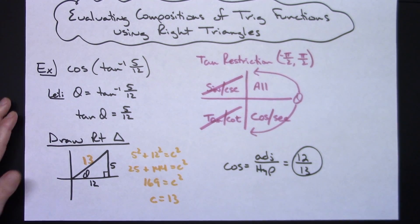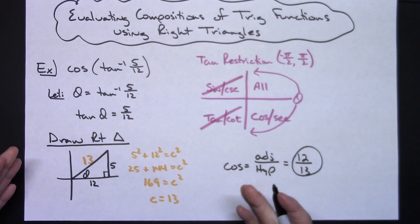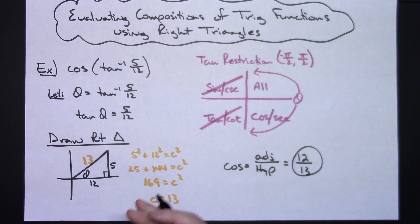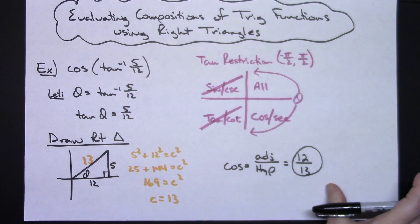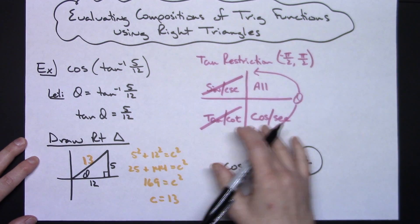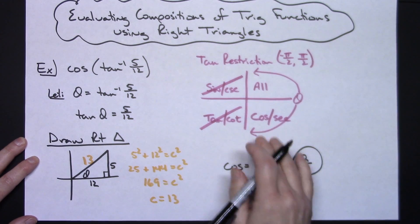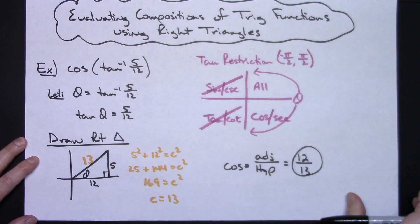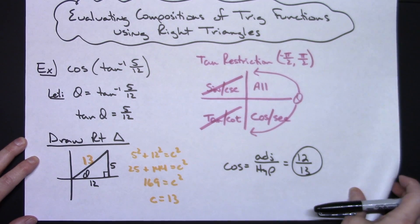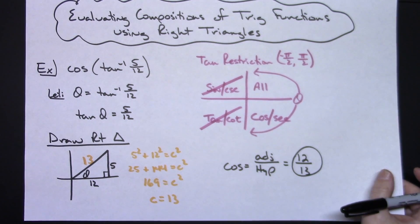So evaluating this composition of trig functions I get 12 over 13. No calculator was needed — just using those bow tie triangles and keeping in mind the restrictions and where trig functions are positive. Now let's do another one.